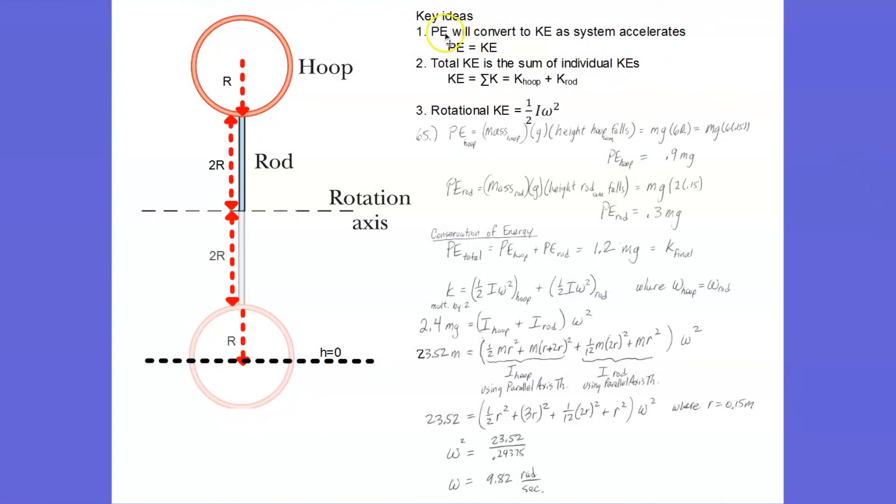Our key ideas for this problem will be number one, our gravitational potential energy as it falls will convert to kinetic energy.